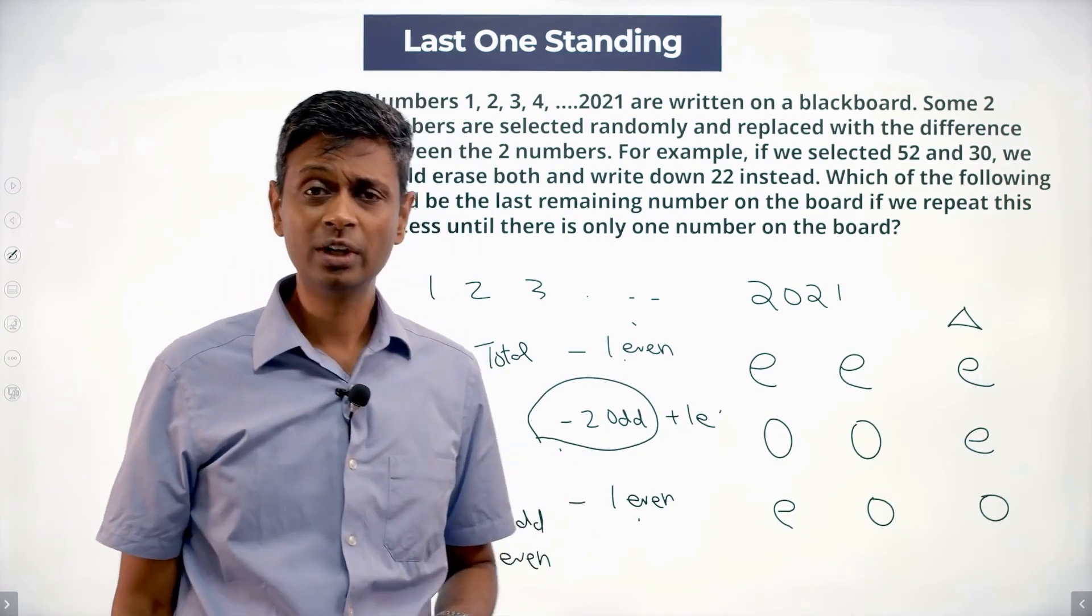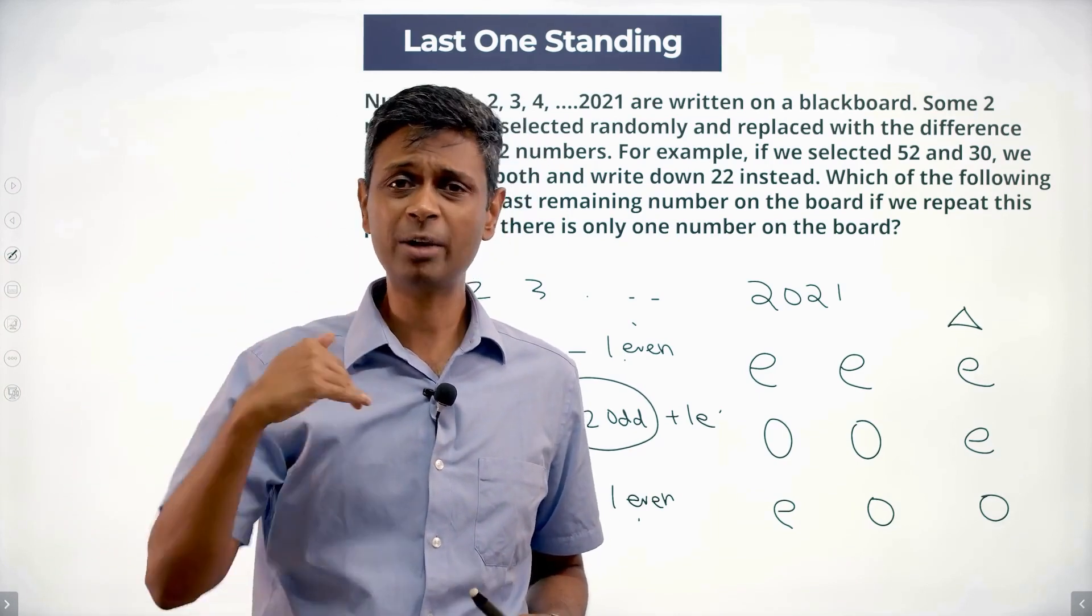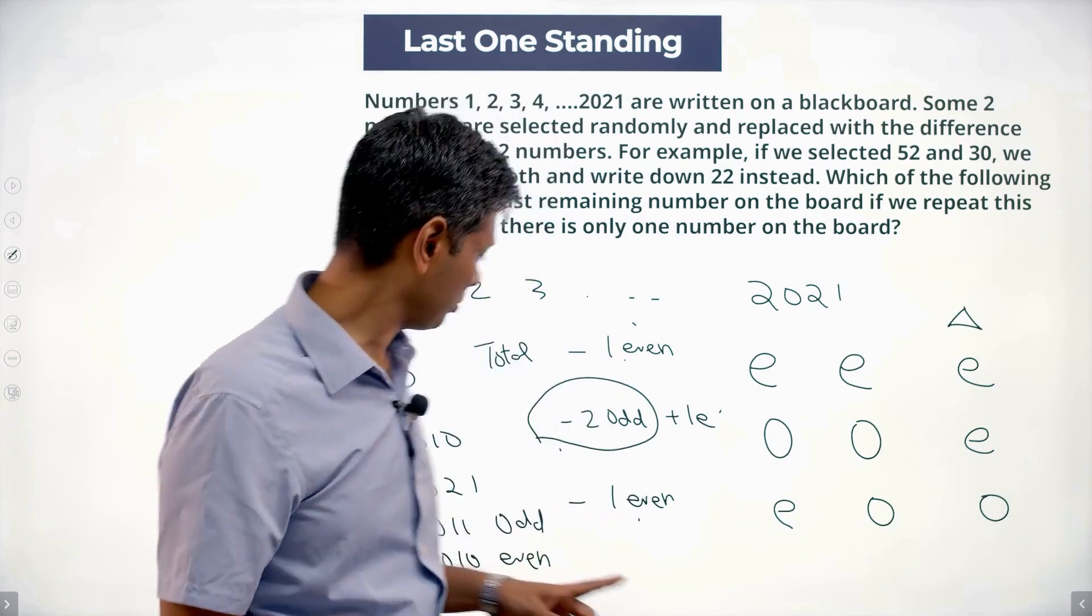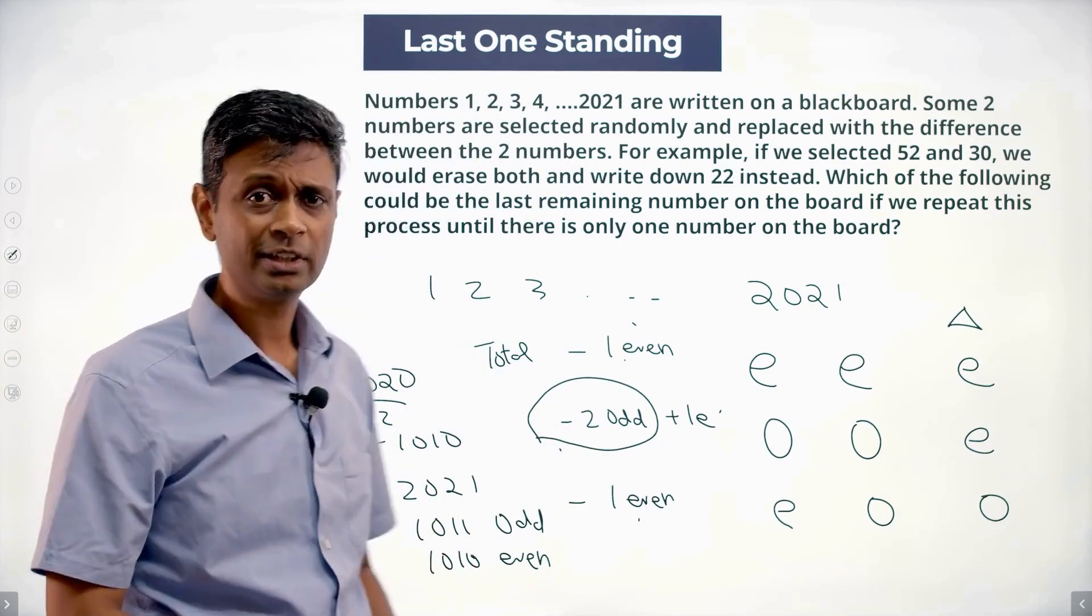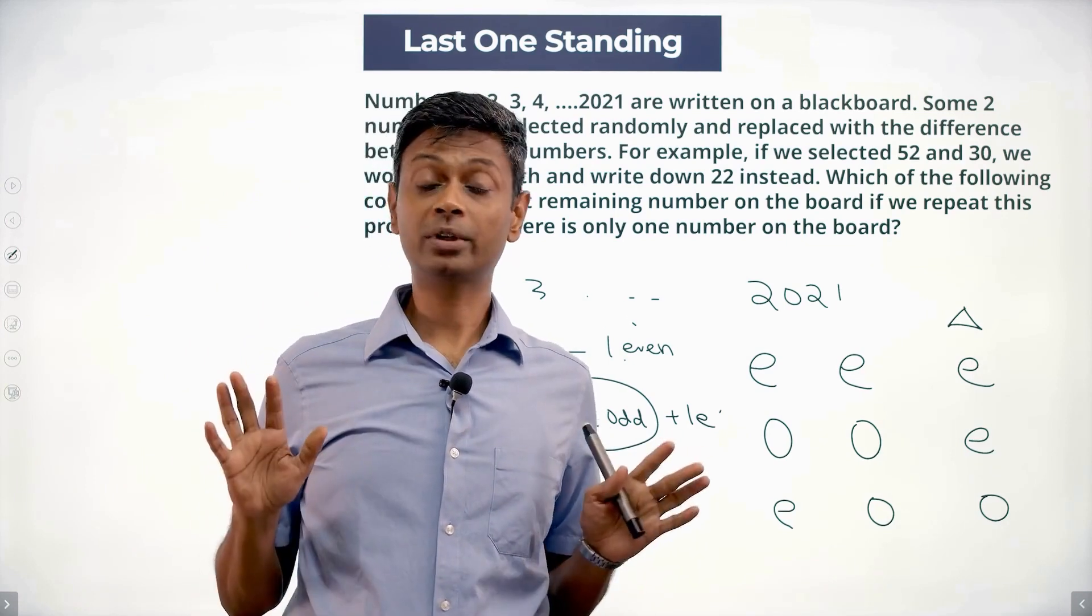Whatever we do, we'll either reduce the number of odd numbers by two or keep it as it is. So from this 1011 odd numbers, I'll keep on dropping two odd numbers. Or I'll do nothing to it.